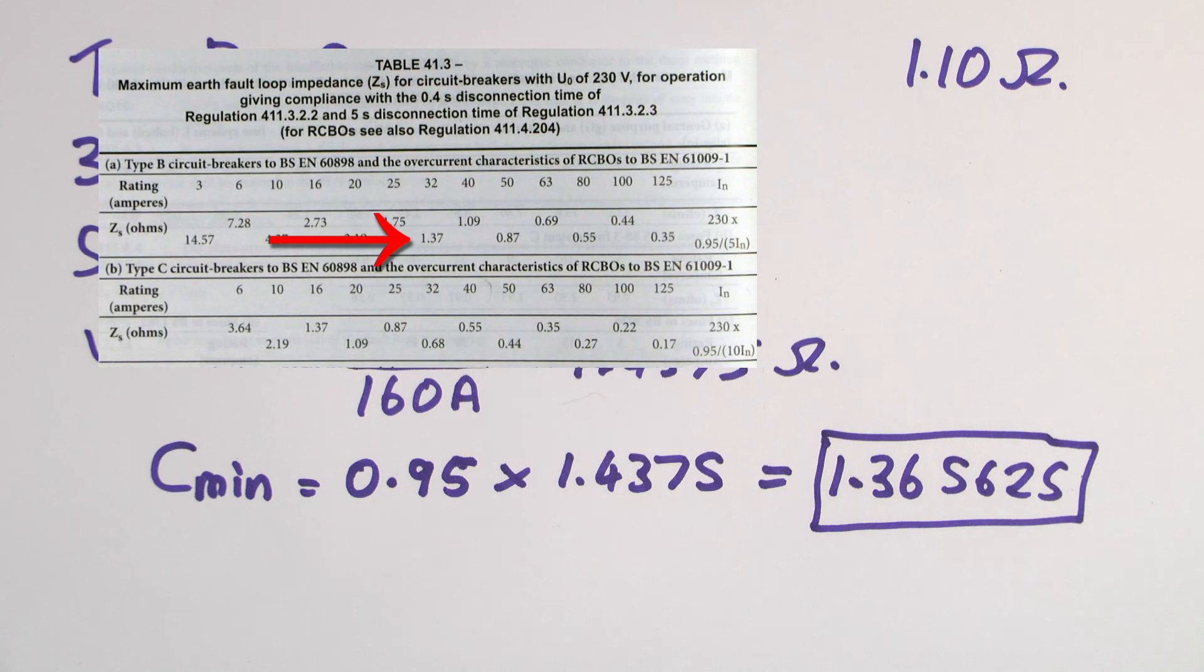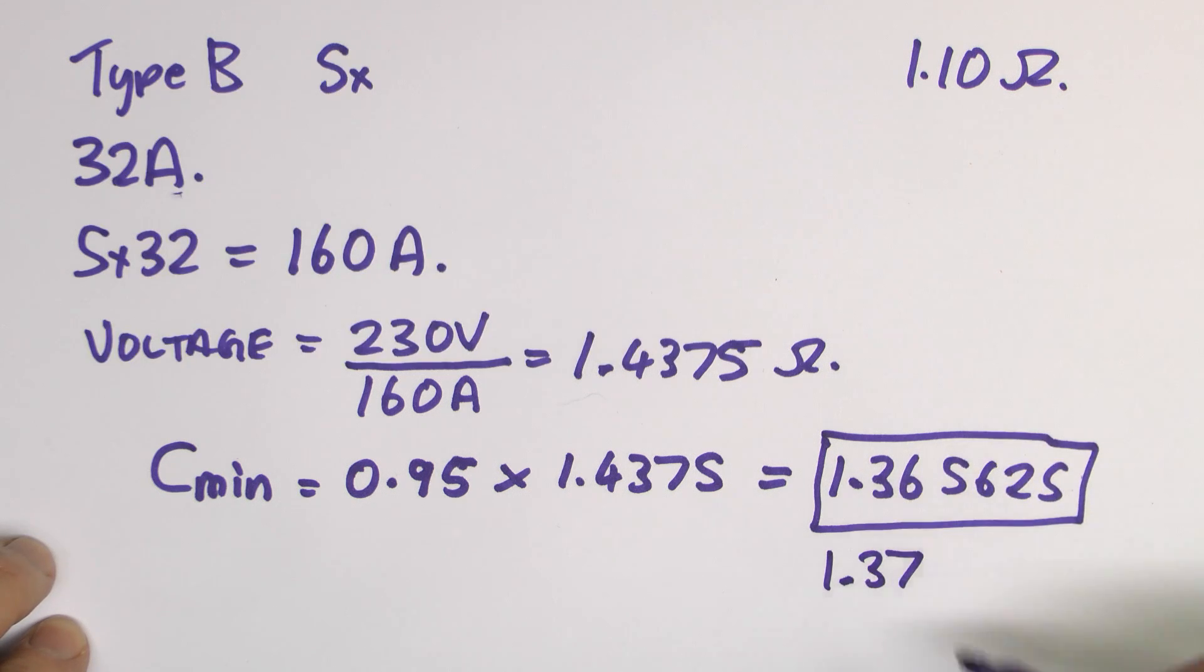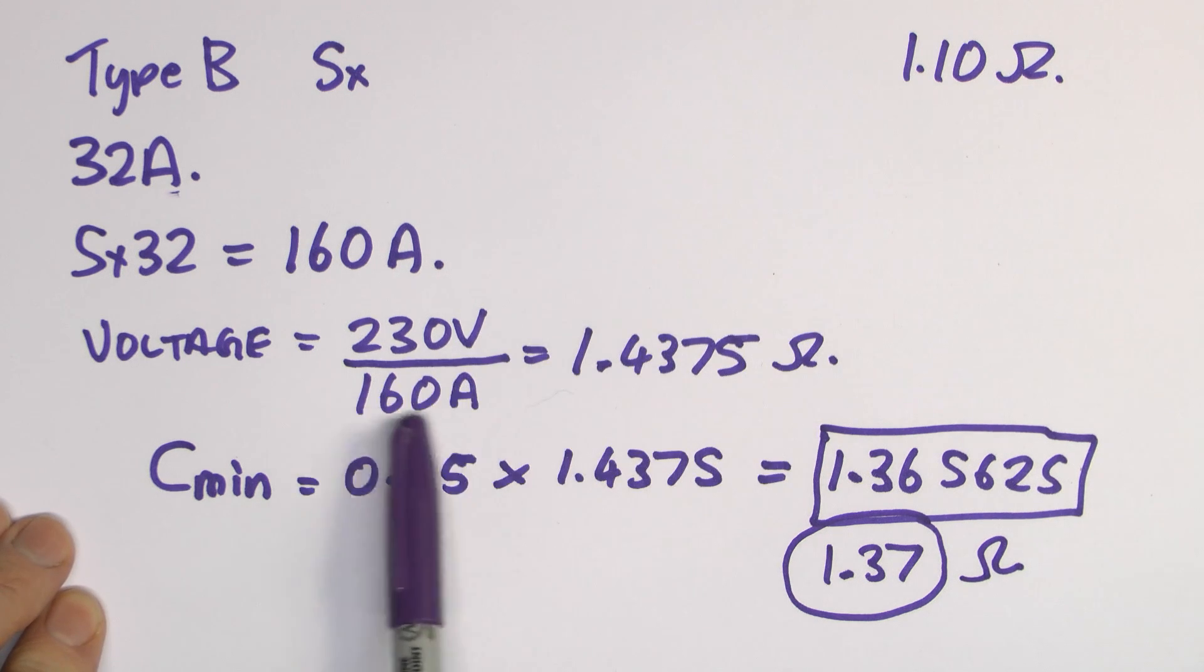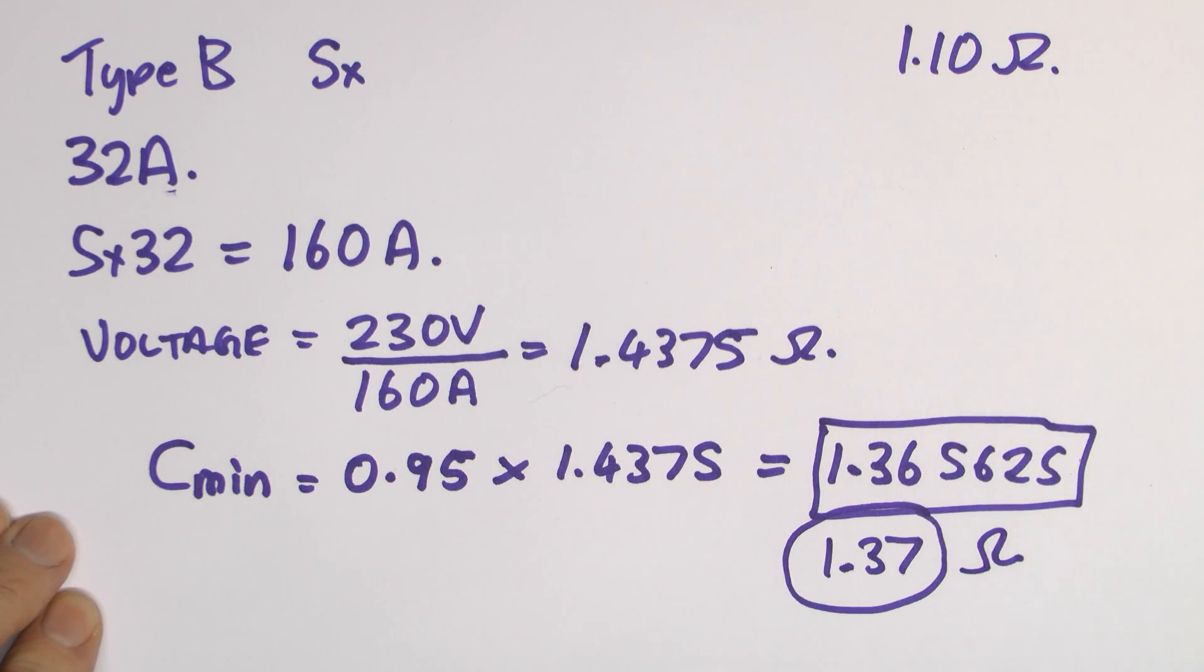And the value we get from that is 1.365625 but we don't really care about all of those digits. So this here is really our result from the calculations. So all we're doing is type B gives us five times. We know it's a 32 amp device so 160 amps is the current we need. Resistance or impedance for that is voltage divided by the current. So 230 volts divided by 160 gives us 1.4375. And then we're going to apply this correction factor of Cmin, which is just basically to allow the fact that the voltage could be less than 230 volts in some cases. And we get 1.365625. Now if we have a look in that table 41.3, we can see the value it's got in there is 1.37. And that's basically what we've got here because all that is is we're just rounding up to the two decimal places. And that gives you the value of loop impedance that you'll be looking for. And again, this is the maximum value because of course if this value is lower, then it means that the current you're getting is actually considerably more than this.